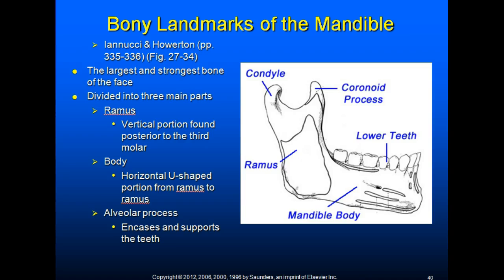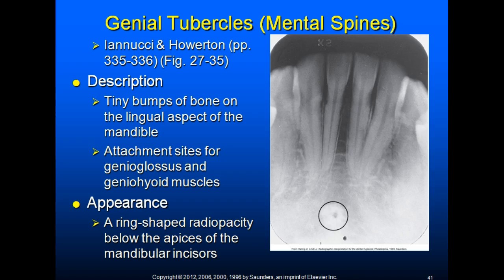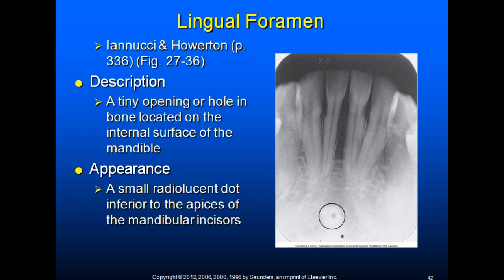The genial tubercles are tiny bumps of bone on the lingual aspect of the mandible and serve as an attachment site for the genioglossus and geniohyoid muscles. Also known as mental spines, they appear as a ring-shaped radiopacity below the apices of the mandibular incisors. The radiolucent spot in the center is the lingual foramen — a tiny hole in bone located on the internal surface of the mandible near the midline, surrounded by the genial tubercles.